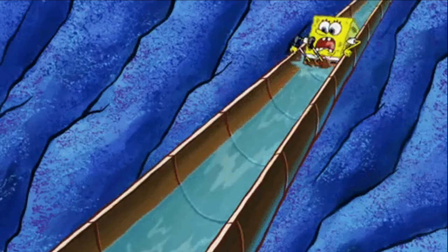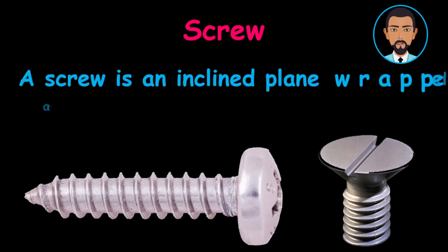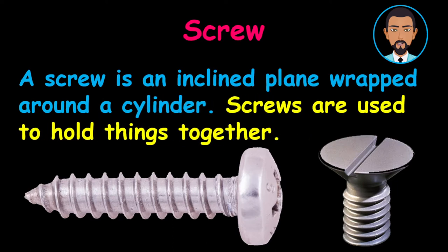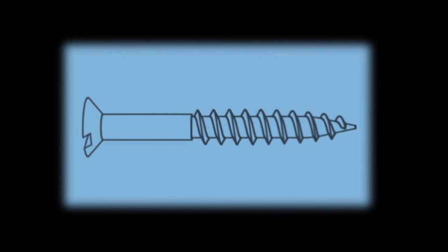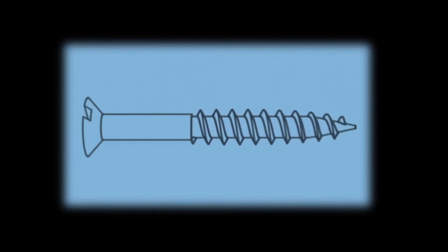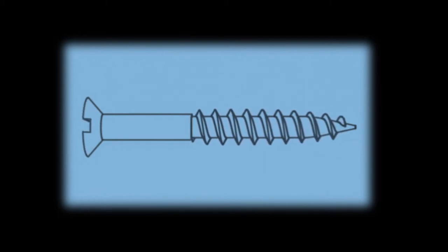Let's look at screws. I know all of you know what screws look like, but do you know what they really are as a simple machine? Well, a screw is an inclined plane wrapped around a cylinder. Screws are used to hold things together. Look at the pictures carefully to see the inclined planes. Look closely to see the inclined plane moving along the metal cylinder.